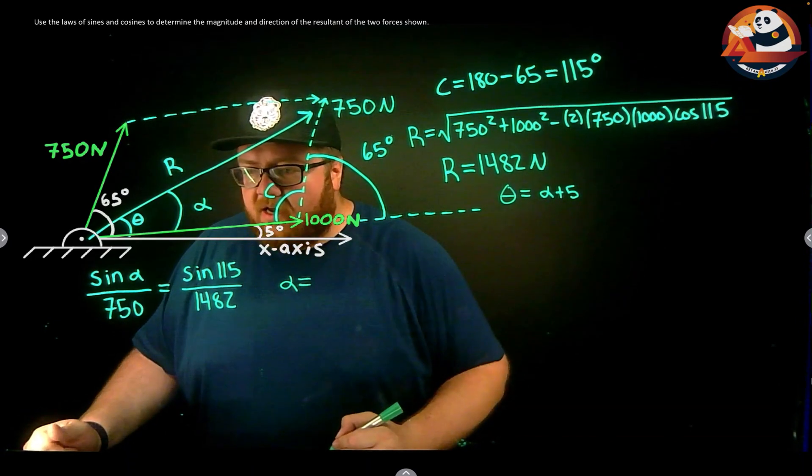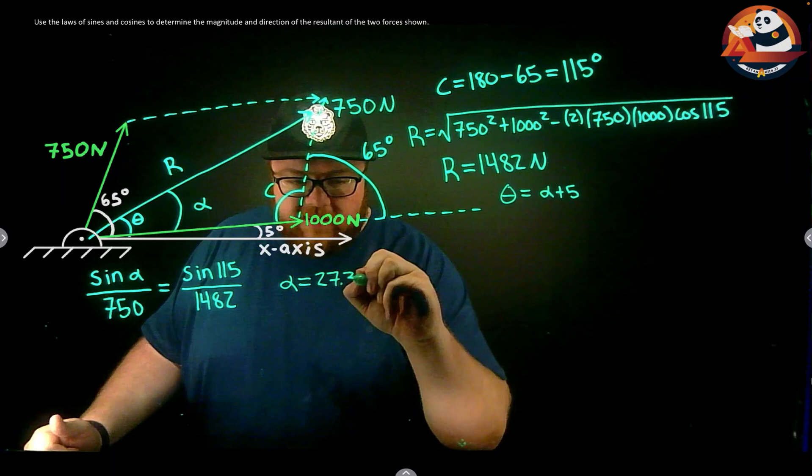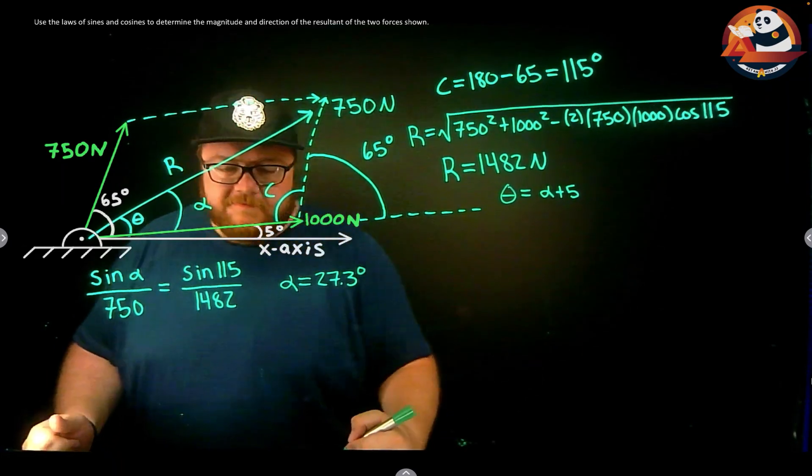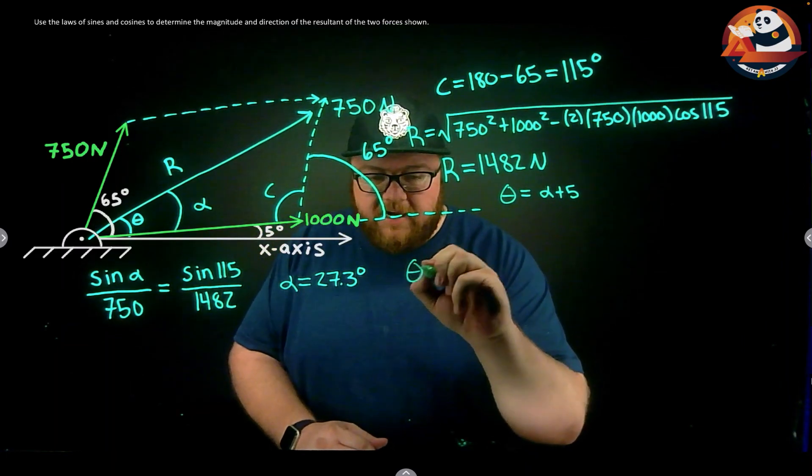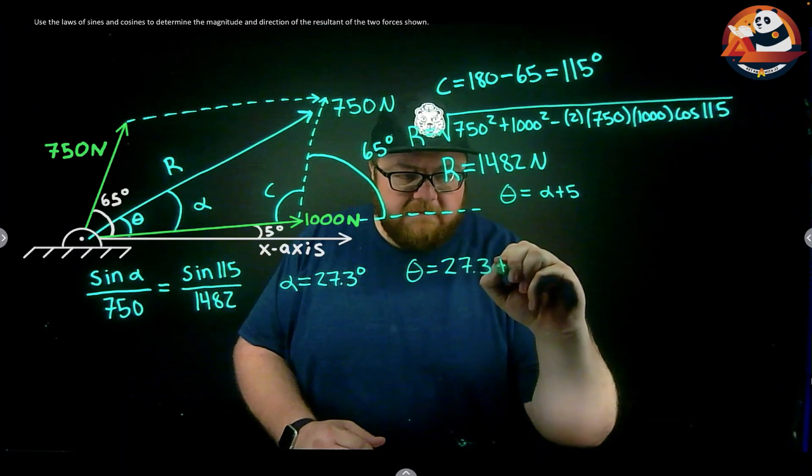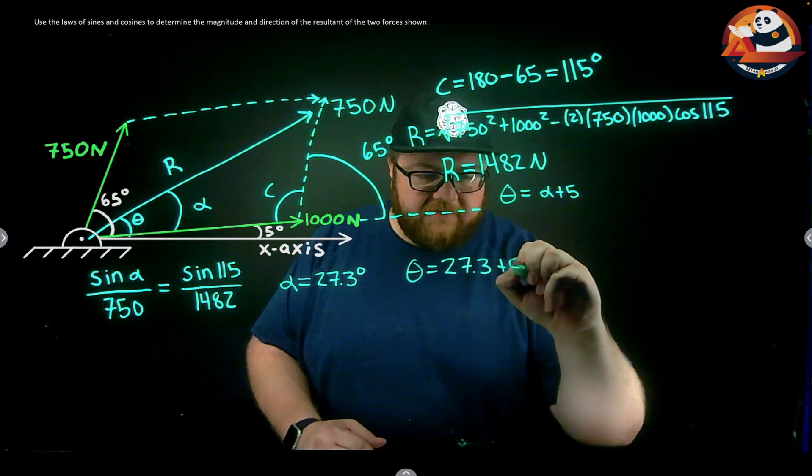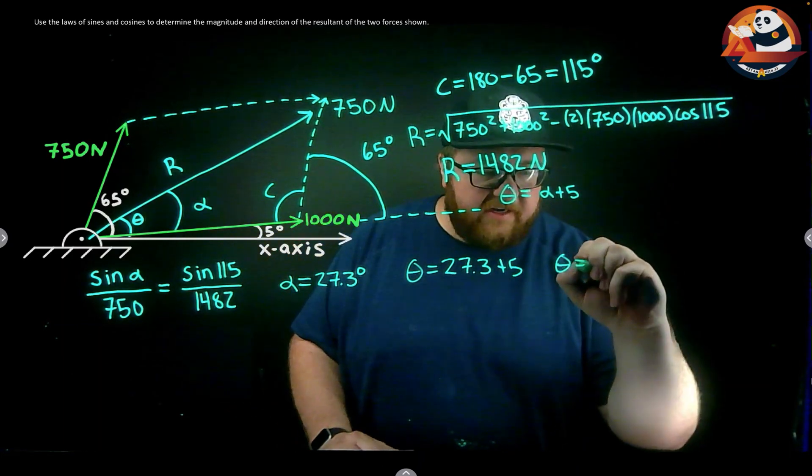From there I can get to theta. Theta should be alpha - theta is alpha, 27.3, plus 5 degrees. Plus 5, my angle on here is 32.3 degrees, which does get me - I have magnitude, I have direction, I just need to combine those into one answer statement.